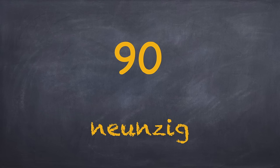As you must have noticed, all these numbers have the same ending: zwanzig, vierzig, sechzig, achtzig. However, only dreißig has a different ending. Why don't you go back to number 30 and see it for yourself.